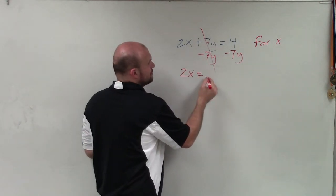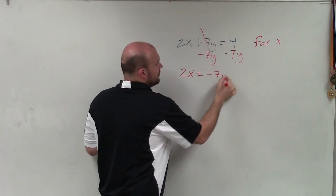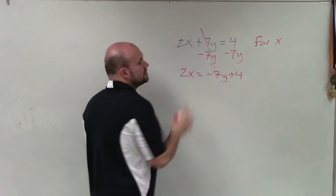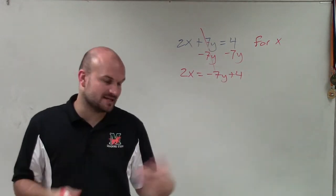But now I have 2x equals negative 7y plus 4. We always like to write the term with the variable in front of our constant, or our number.